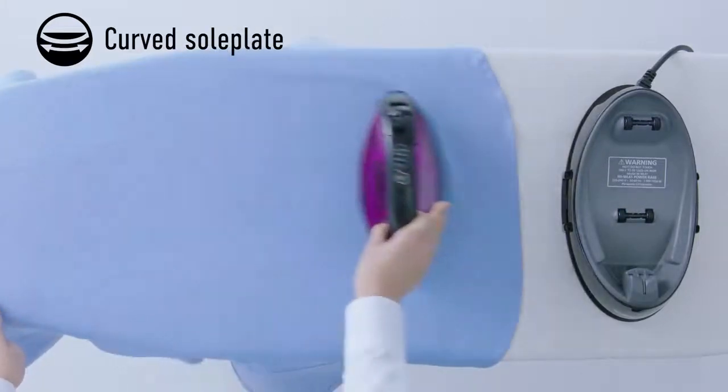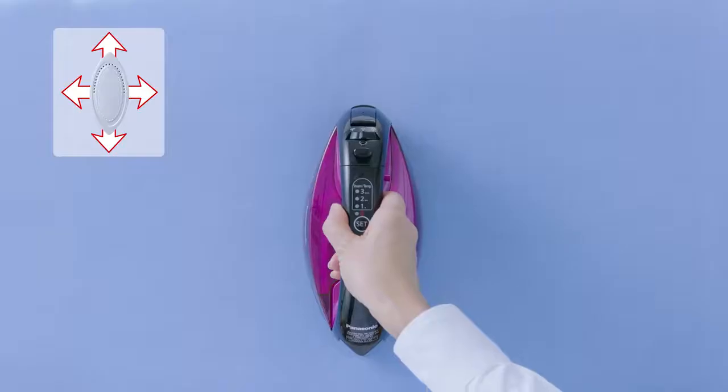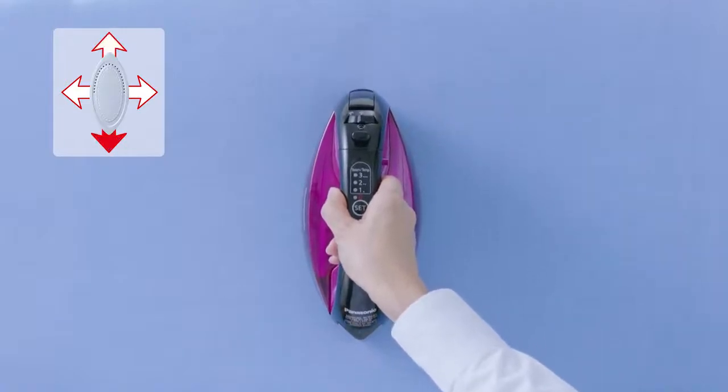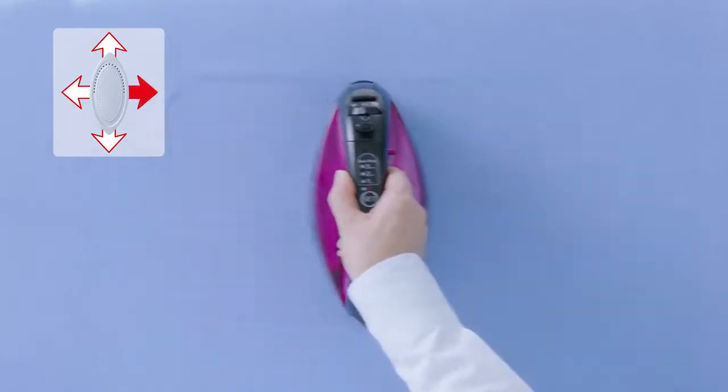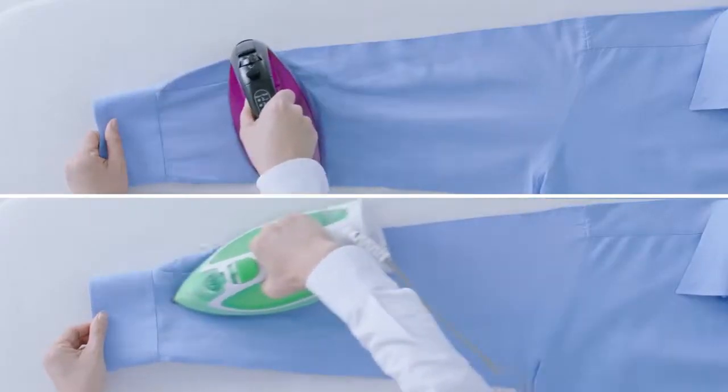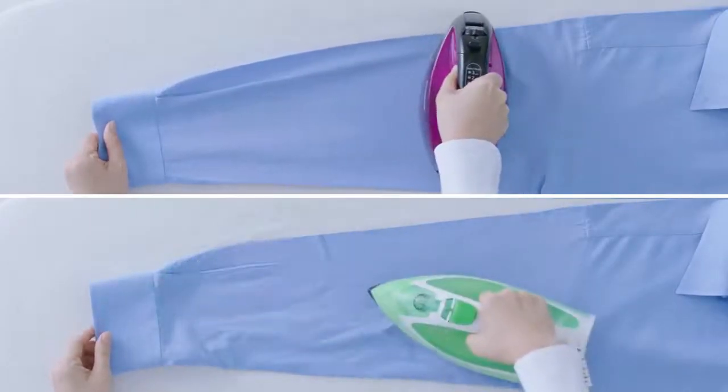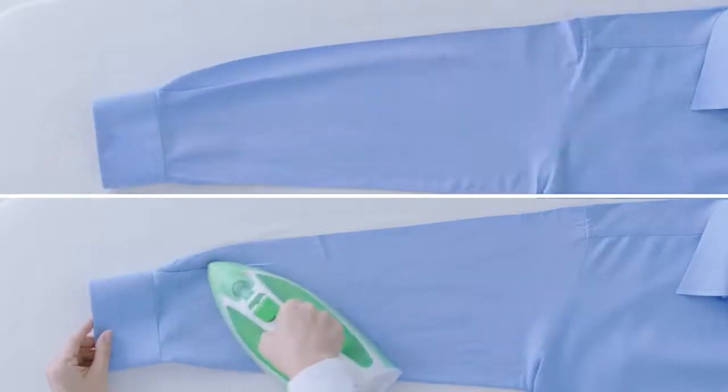The iron can move smoothly even from side to side. This multi-direction sole plate means the iron can move freely in any direction for maximum efficiency. You can iron sleeves with a single stroke instead of the two or three passes it used to take.